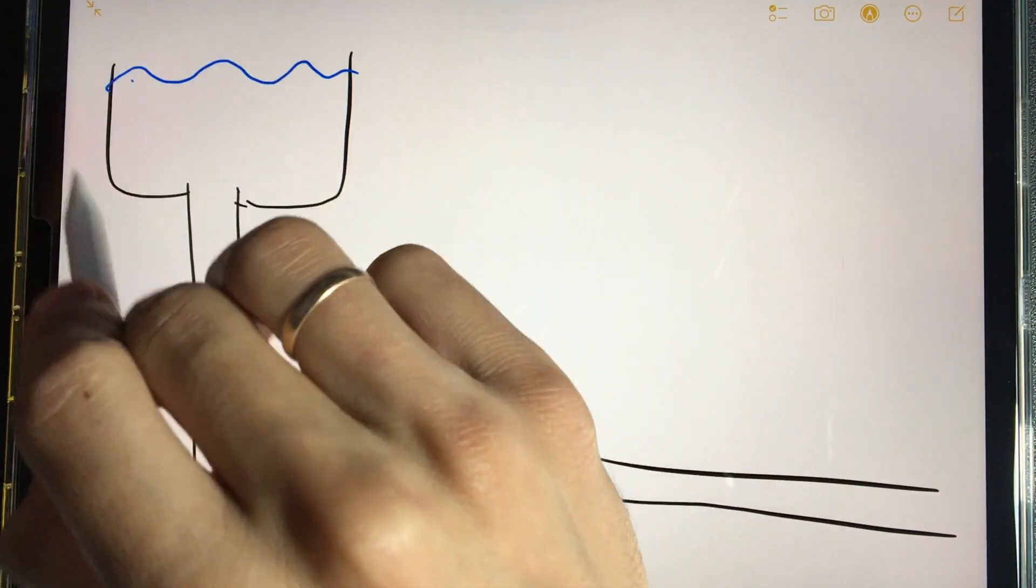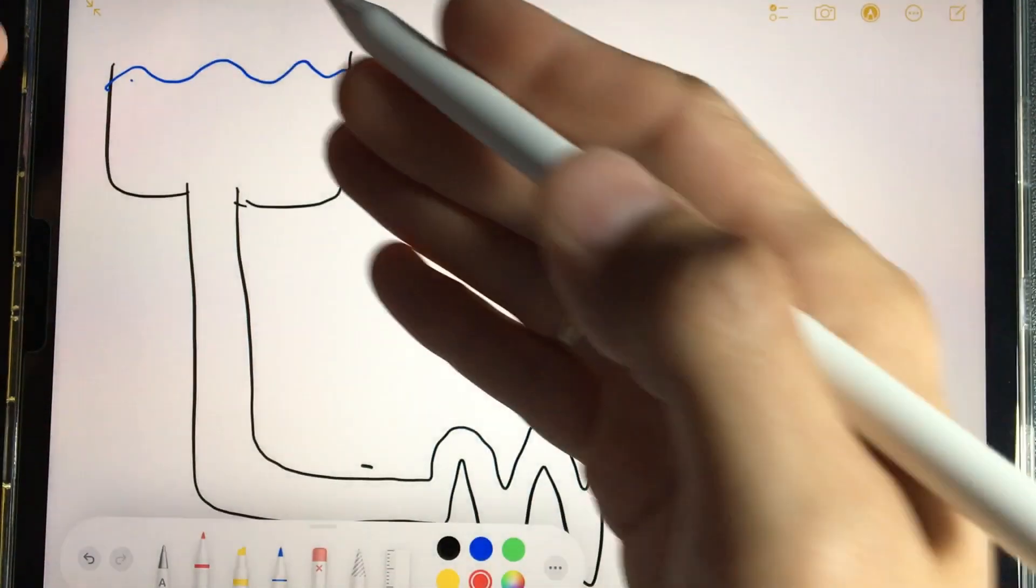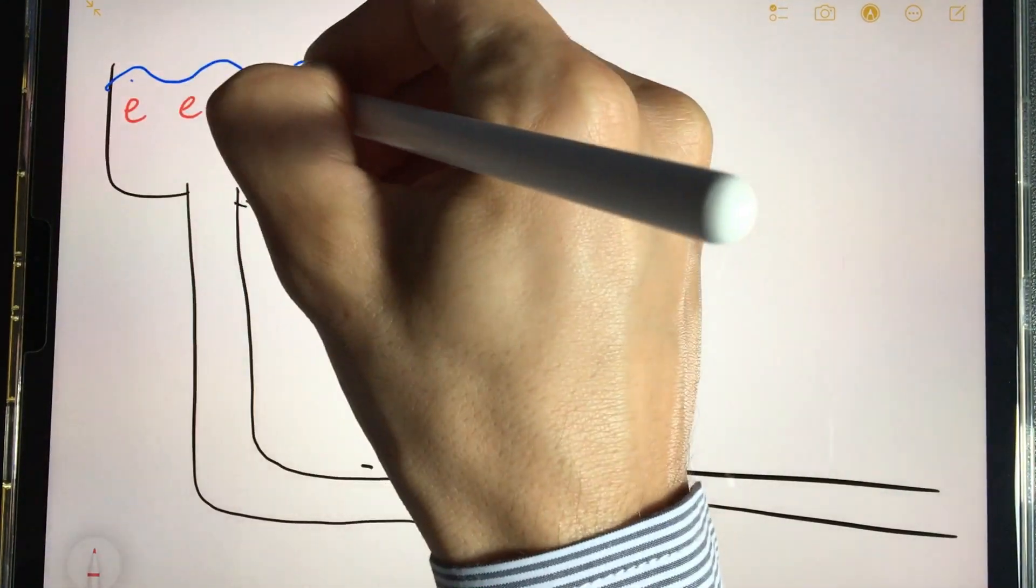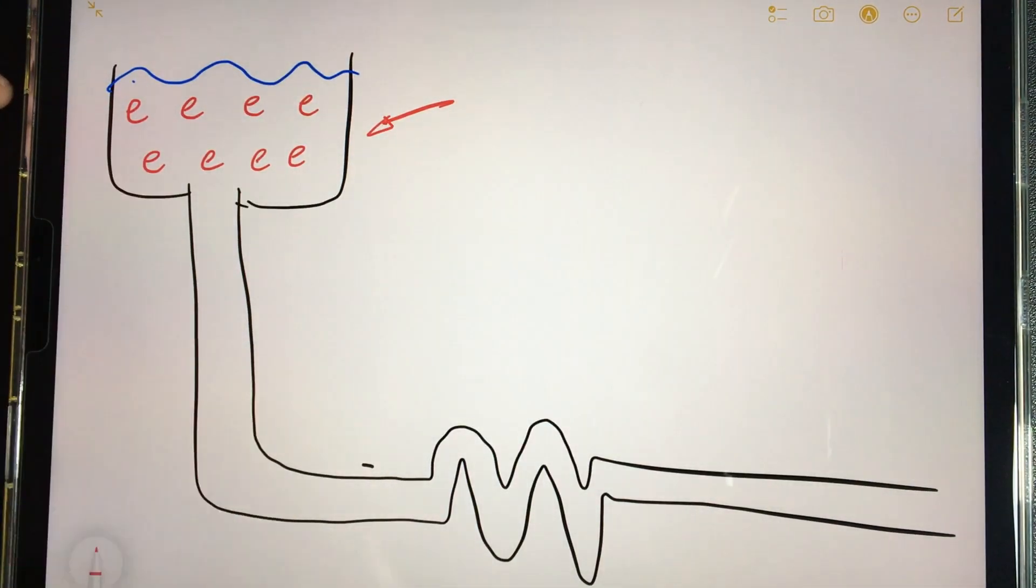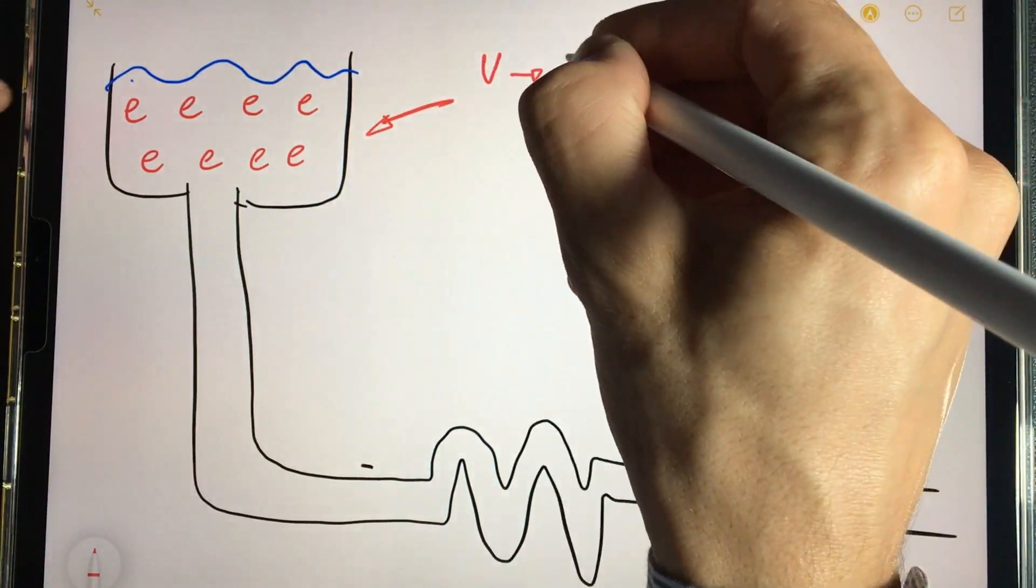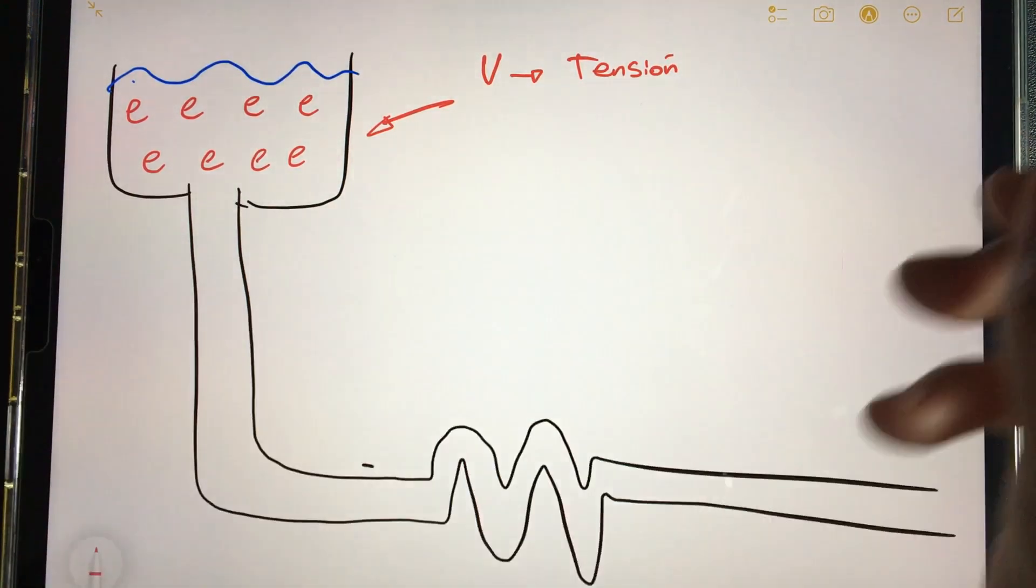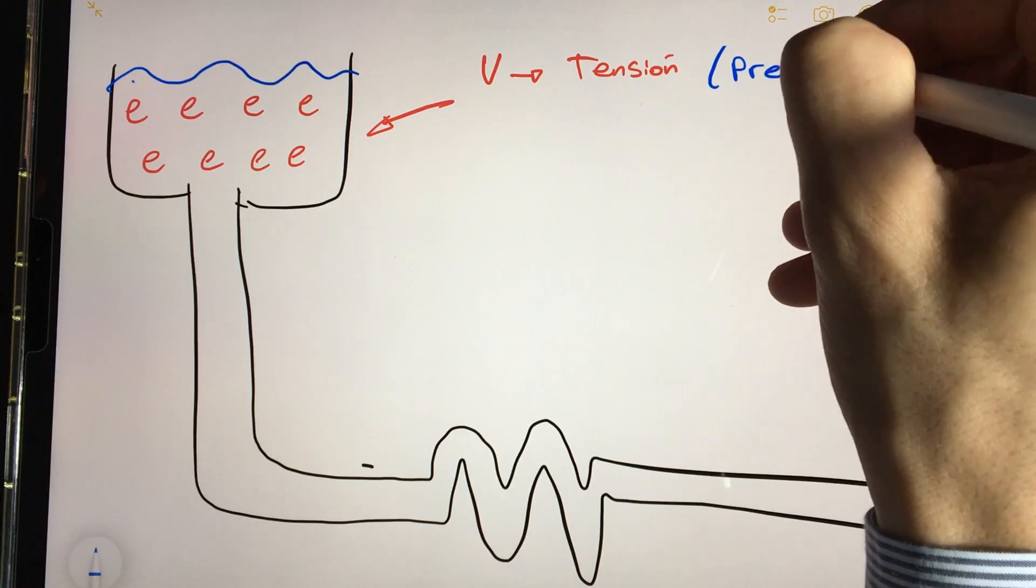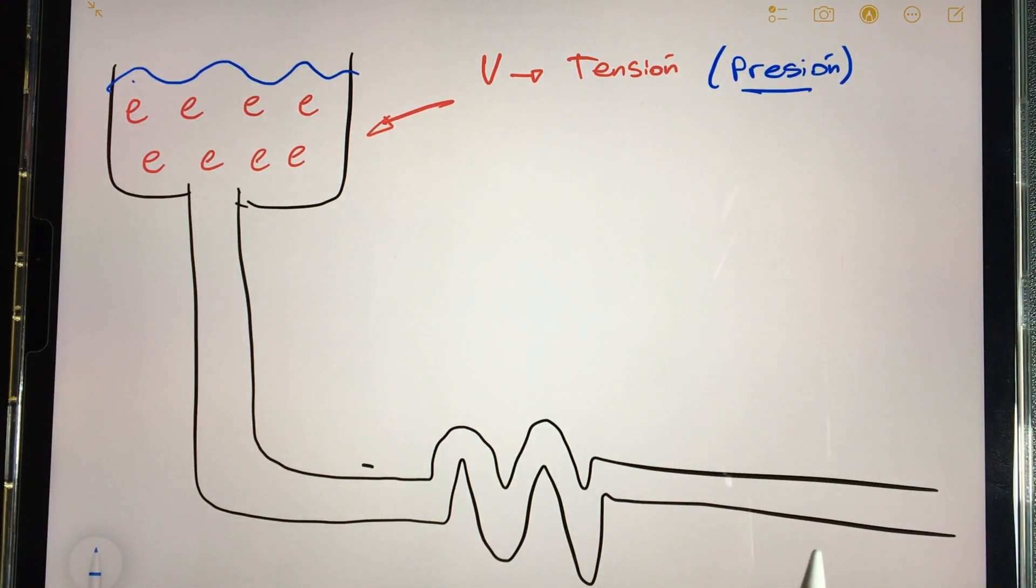If we talk about having a water tank with a certain level of water, this will indicate how much water pressure I have in the circuit. We are going to draw here as if they were electrons exerting certain pressure on a circuit. The pressure of water in electricity is what we measure with voltage or tension. If we compare it to water, this would then be the pressure.